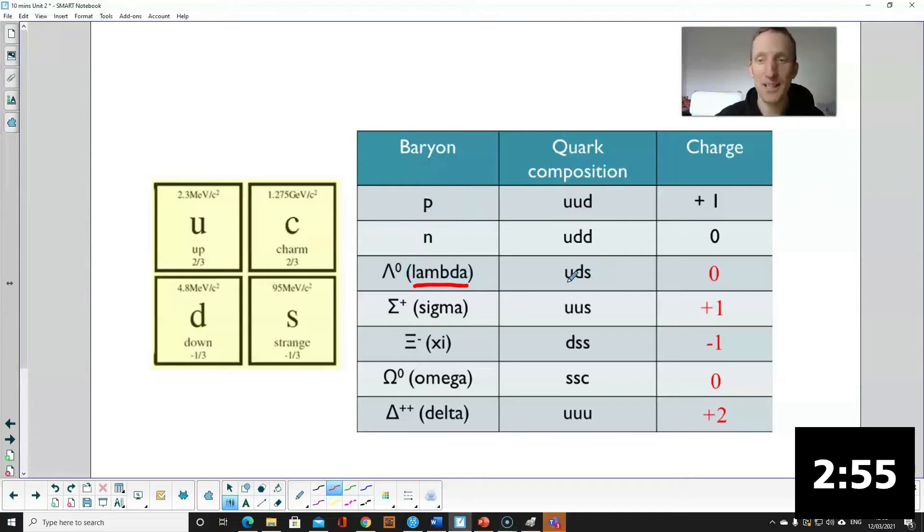So for example this lambda particle is made up of an up, a down and a strange. So you have two thirds minus a third minus a third. Add two thirds minus third minus third you get an overall charge of zero.